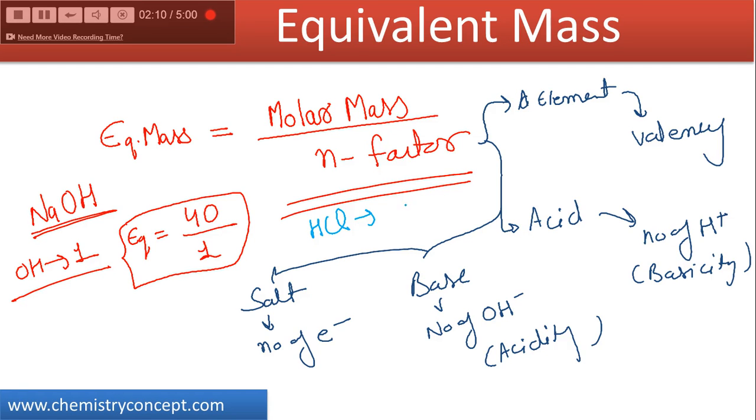Again, n-factor is one here and the molar mass is 36.5 divided by - it's an acid, replaceable hydrogen is only one, so we have to divide by one here also. And if we are calculating for NaCl